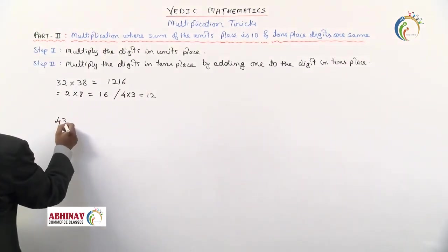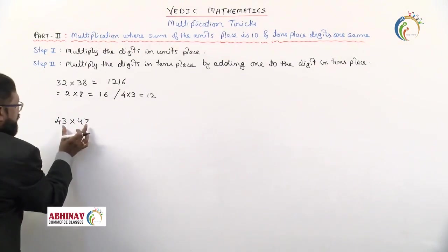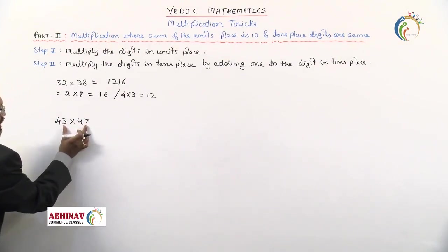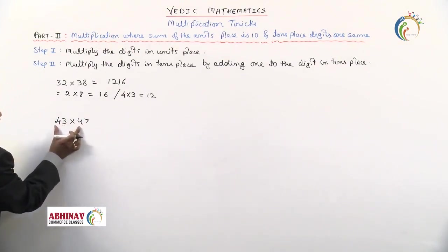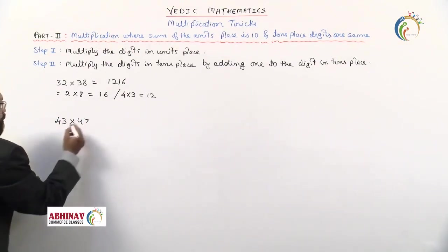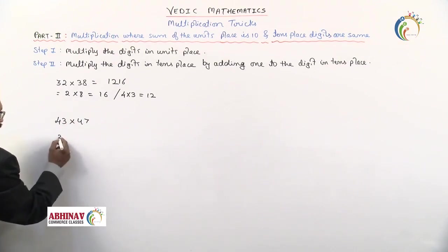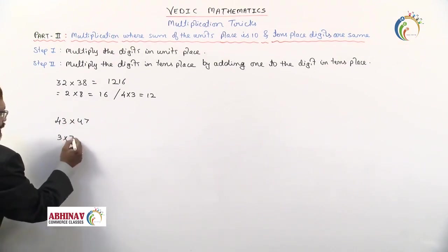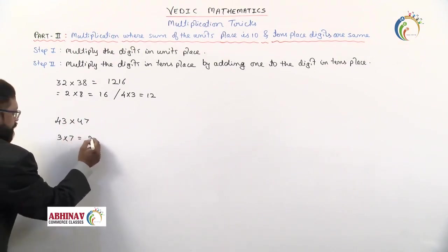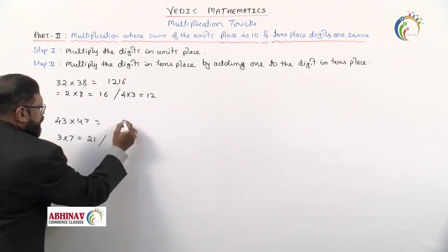Another example: 43 × 47. Units digits are 3 and 7 — their sum is 10 — and the tens digits are both 4. Step 1: 3 × 7 = 21. Write 21 on the right-hand side.